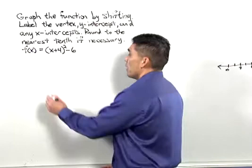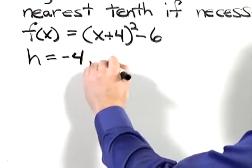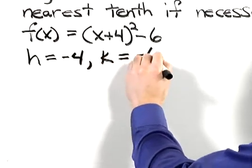In this problem, the h value is negative 4, and the k value is negative 6.